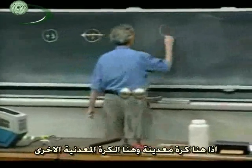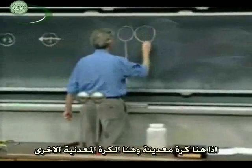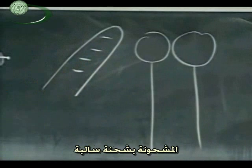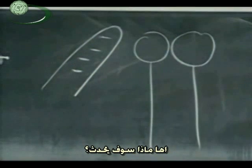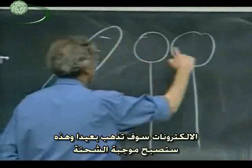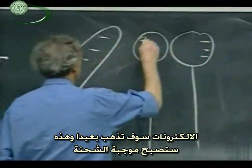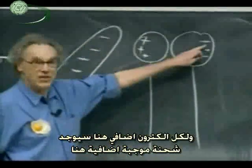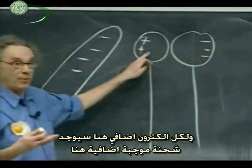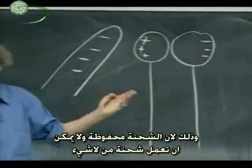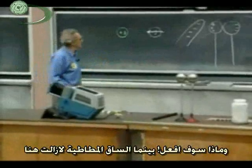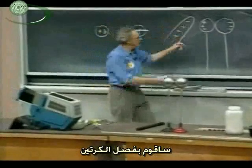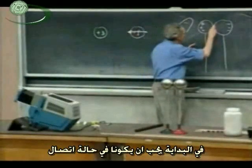Here is one metal sphere and here is the other metal sphere. Here comes the rubber rod, negatively charged. What's going to happen? The electrons want to go away, so this side becomes negatively charged, and therefore the other side remains a little bit positively charged. For every electron in excess on one side, there will be a positive excess on the other side because charge is conserved — you can't create charge out of nothing. And now, while the rubber rod is still here, I separate them.